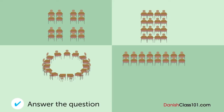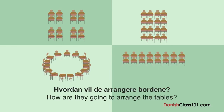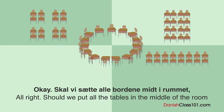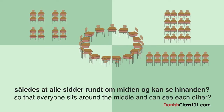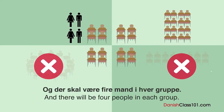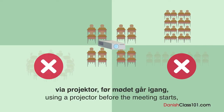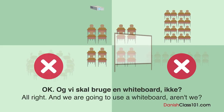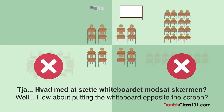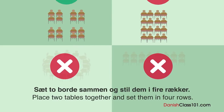Hvordan vil de arrangere bordene? En mand og en kvinde taler om layoutet på mødelokalet. Lad os arrangere bordene til morgendagens møde. Skal vi sætte alle bordene midt i rummet? Nej - der kommer til at være en gruppesession først, så lad os dele bordene i fire sektioner med fire mand i hver gruppe. Jeg sætter noteblokke og kuglepenne på hvert bord. Vi starter med en kort forklaring via projektor. Vi skal bruge en whiteboard. Er det okay at stille whiteboarden ved siden af skærmen? Hvad med at sætte whiteboardet modsat skærmen - lad os sætte det i enden af rummet. Husk at sætte alt tilbage på plads efter mødet. Sæt to borde sammen og stil dem i fire rækker.